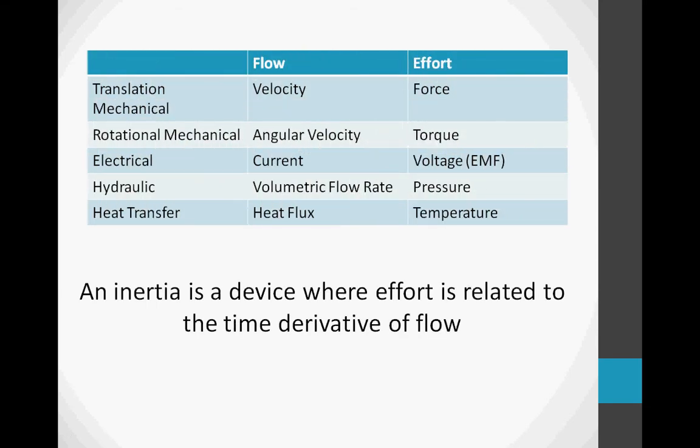Some more common dynamic systems include a translational mechanical system, where the flow variable is velocity and the effort variable is force. A second is a rotational mechanical system, where the flow variable is angular velocity and the effort variable is torque. Another is a hydraulic system, where the flow variable is volumetric flow rate and the effort variable is pressure. Heat transfer is another dynamic system, where the flow is heat flux and the effort is temperature. A final dynamic system is an electrical dynamic system, where the flow variable is current and the effort variable is voltage.